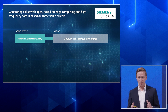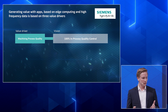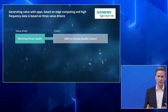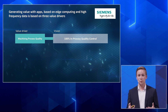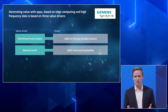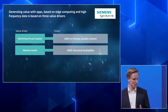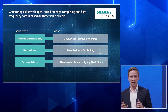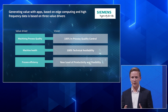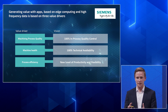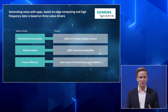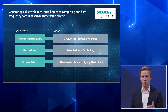First, the value drivers — based on what do you want to generate value? The first is machining process quality: we believe we can achieve 100% in-process quality control. Second, machine availability: we believe we can achieve 100% technical availability of our machine tools. Third, by leveraging 100% of the available machining knowledge inside the data, we can achieve the next level of productivity and flexibility on the shop floor.